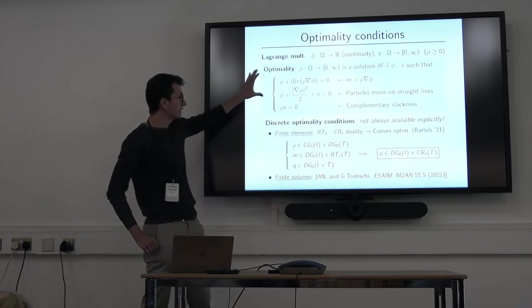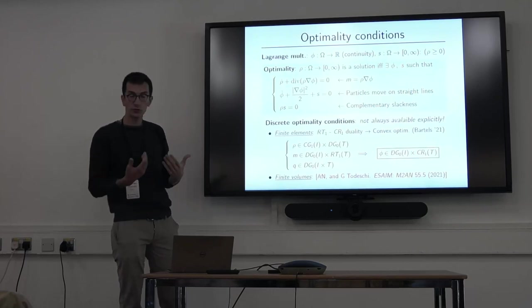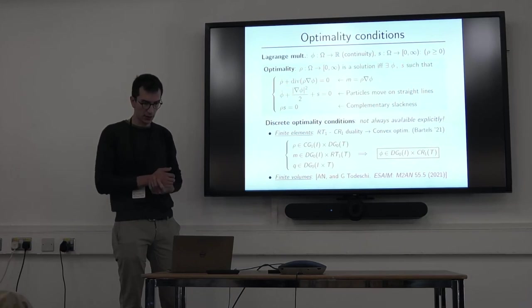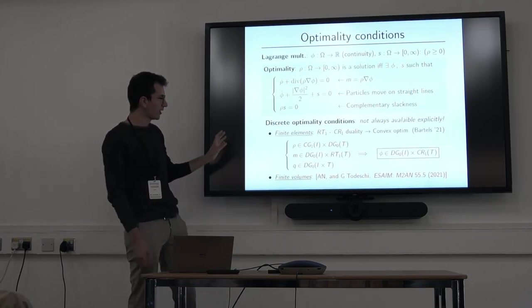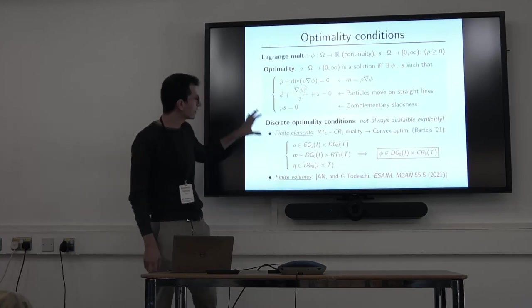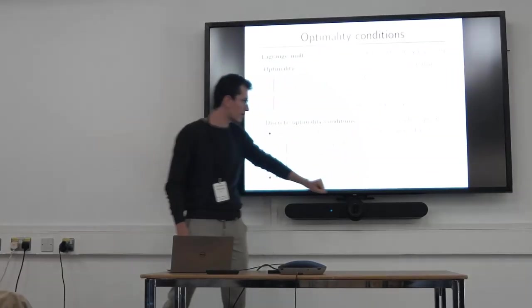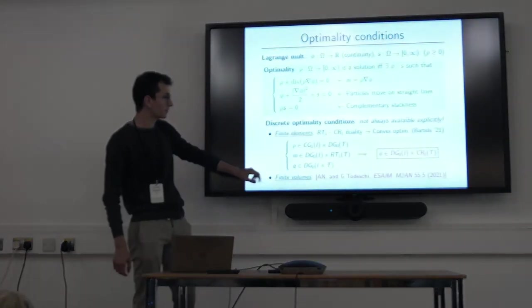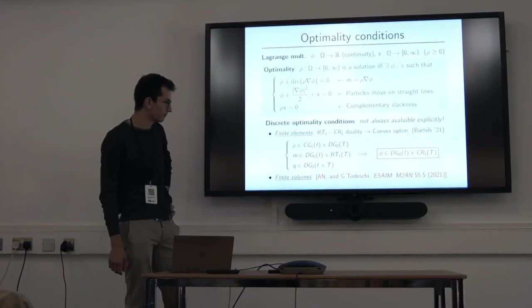And the important thing is that you want to have this type of system to be able to construct it also in the discrete setting, which is not generally trivial if you start from our primal problem where you discretize the momentum and the density. But if you choose spaces carefully, you can have some sort of discrete duality. And in particular for these spaces, you can arrive at a system that looks like this using the Crouzeix-Raviart space for the potential.